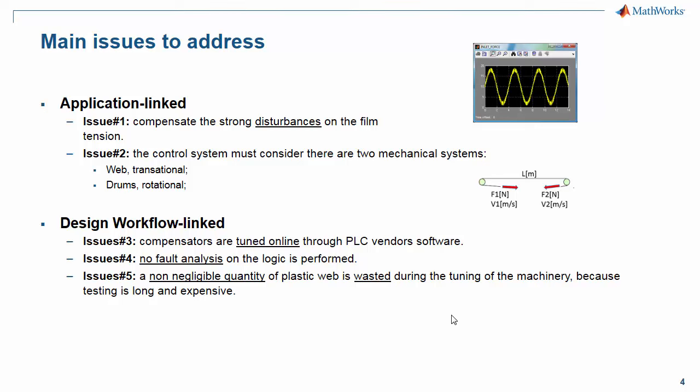Then there are no tools to perform fault analysis on the system. As a result, some conditions, particularly critical, and if the worst comes to worst, breakdown conditions are not detected systematically. And finally, a considerable quantity of web is wasted during the tuning of the machinery because testing is long and expensive. In order to tune the system, the final machine or a prototype of it must repeat at least a production cycle, which means wasting material.